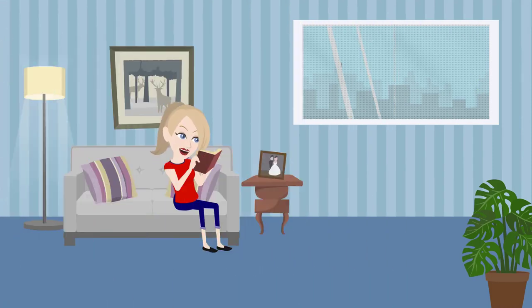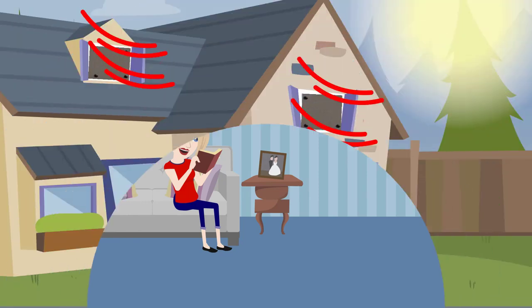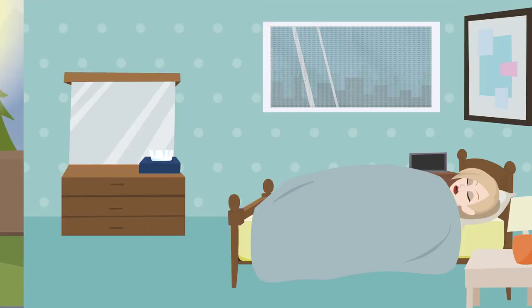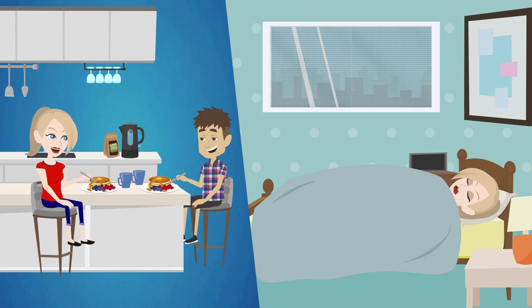Ideal for all homes where you do not want to, cannot, or may not attach anything permanently to windows and frames. With Sun Eclipse solar control screens you can keep a lot of heat out quickly, easily and affordably so you sleep, live and work a lot more pleasantly.